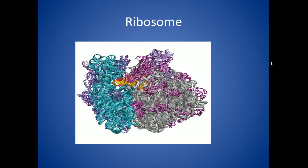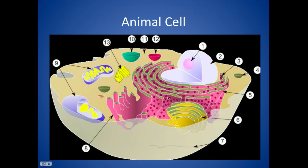This is a ribosome. Ribosomes are in the cell, kind of floating aimlessly sometimes, and they're also centered around the endoplasmic reticulum. You'll find them here and there sparsely, but the majority of them are right here on the rough endoplasmic reticulum. In fact, the rough endoplasmic reticulum is rough because of these ribosomes — they're kind of a granular protein-type structure, and they're used in protein synthesis.